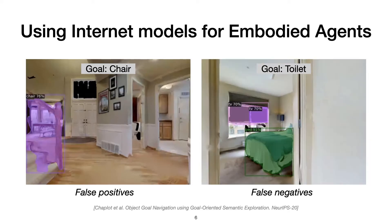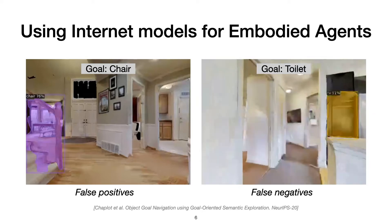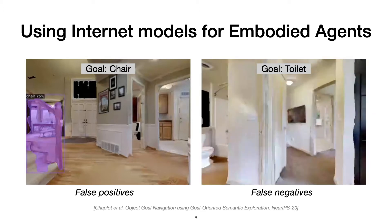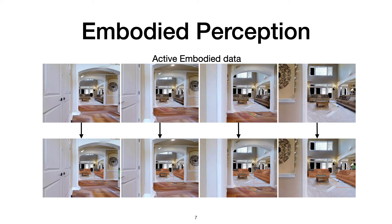On the left, the staircase is detected as a chair, and on the right, the toilet is not recognized by the Mask R-CNN. So how do we train effective perception models for embodied agents? The approach of collecting a lot of images and labeling them densely, which has been successful for internet computer vision, is not really feasible for embodied perception. This is because collecting embodied data requires embodied agents to be operating effectively in the physical world, but training these agents requires labeled embodied images — essentially creating a chicken and egg problem.